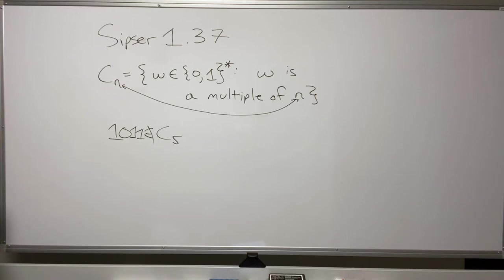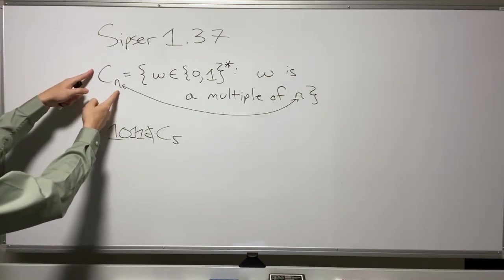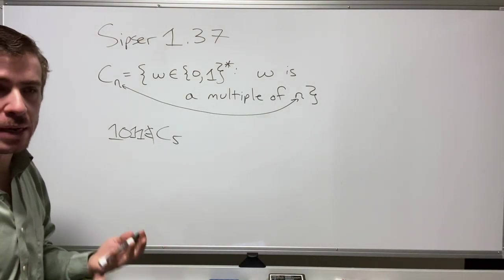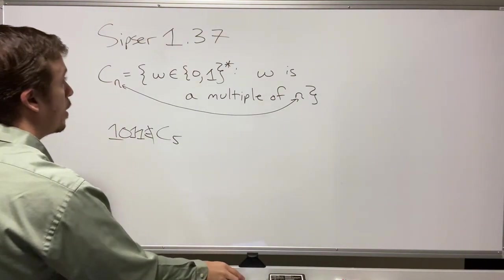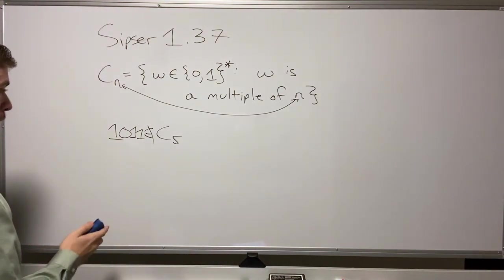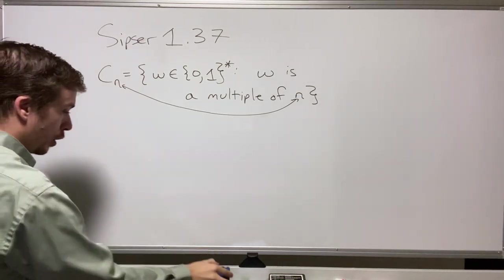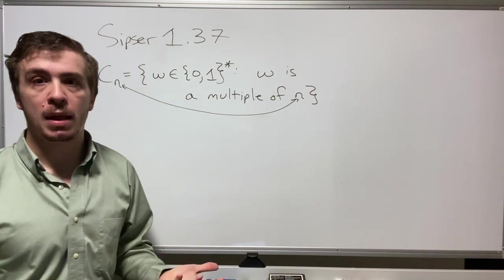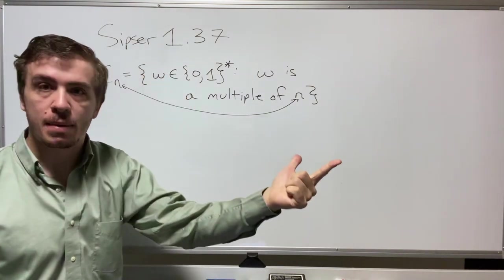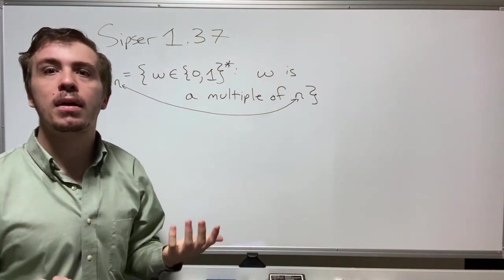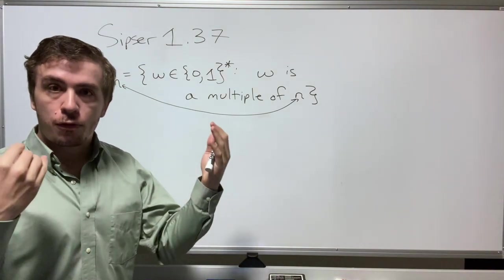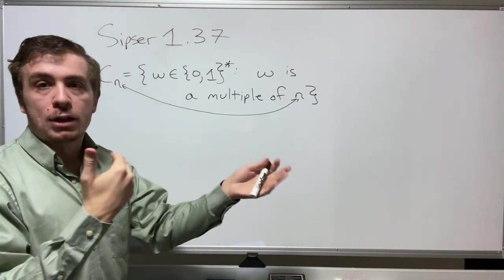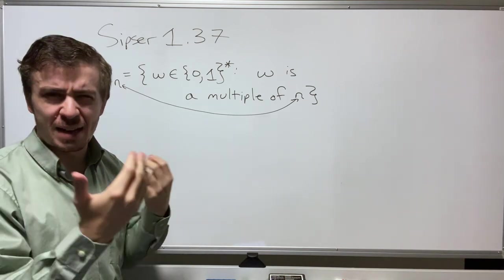How do we show that Cn is regular for every positive integer n? You could say we're going to make a DFA corresponding to each possible outcome — either it is a multiple of n or it is not. The failure with that approach is that for strings that are not a multiple of n, there are actually multiple possibilities.